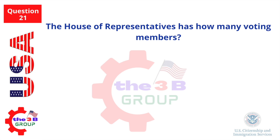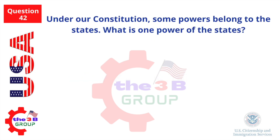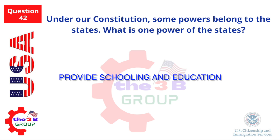The House of Representatives has how many voting members? 435. Under our Constitution, some powers belong to the states — what is one power of the states? Provide schooling and education.